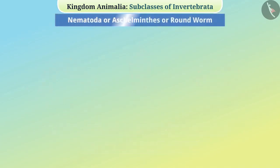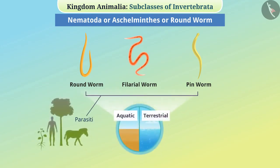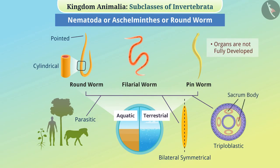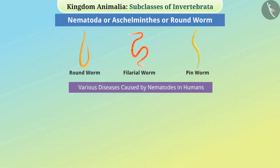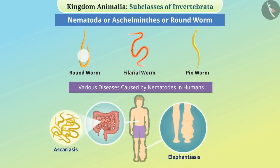Nematoda or roundworms: These include roundworm, filarial worm, pinworm, etc. They are free-living, aquatic, terrestrial, and also parasitic in plants and animals. They are bilaterally symmetrical, triploblastic animals whose bodies are cylindrical with a pointed tail end. Tissues are found in them but organs are not fully developed. Their sac-like body cavity is called a pseudocoelom. Various diseases caused by nematodes in humans include elephantiasis and ascariasis. Among them, males and females are different, with females being larger than males.